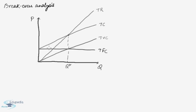Below this quantity the company incurs loss, so this region is the loss region. Above this point the company gets profit.